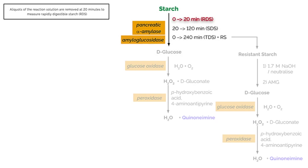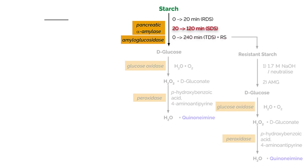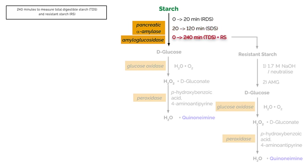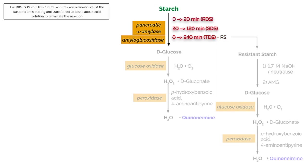Aliquots of the reaction solution are removed at 20 minutes to measure rapidly digestible starch (RDS), at 120 minutes to measure slowly digestible starch (SDS), and at 240 minutes to measure total digestible starch (TDS) and resistant starch (RS).